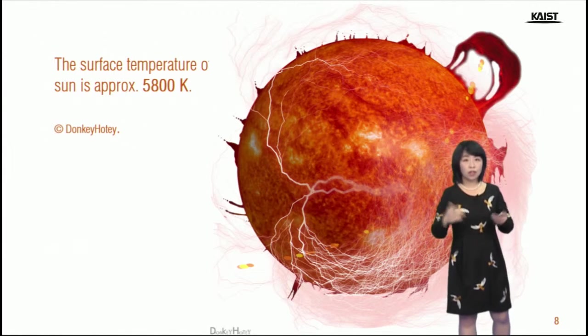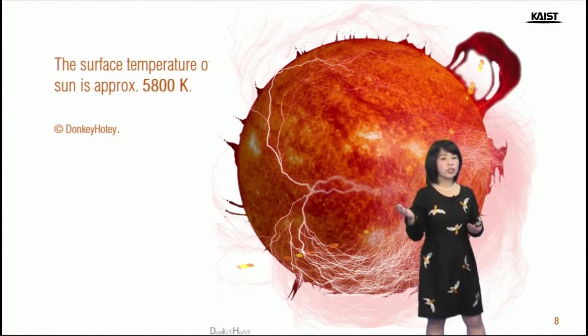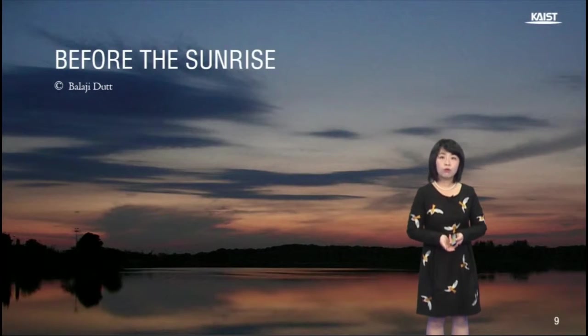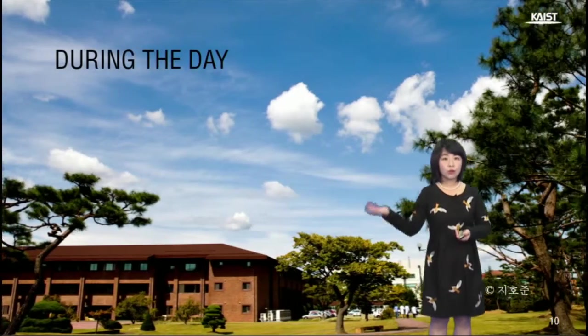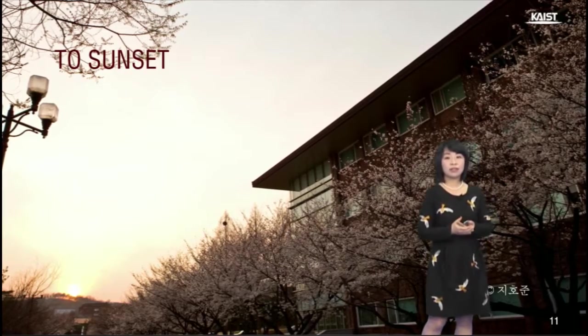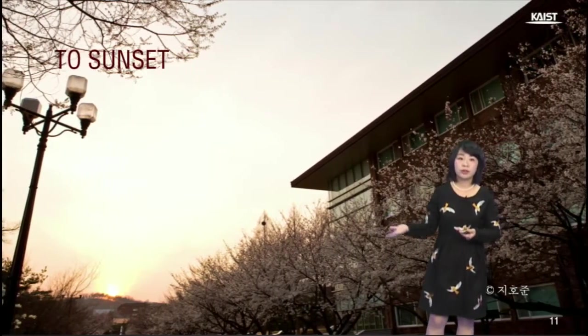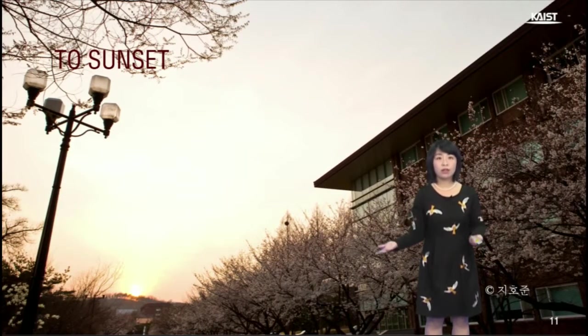And it is almost constant. However, just imagine the sun you experience during the day. Before the sunrise, during the day, last but not the least, the sunset. The color of light we experience from the sun is not one. The color changes rather dynamically.